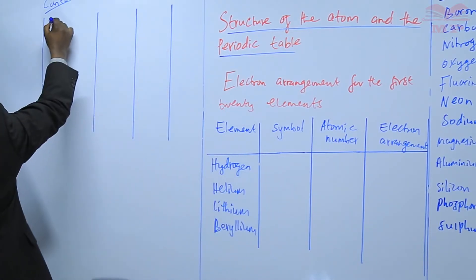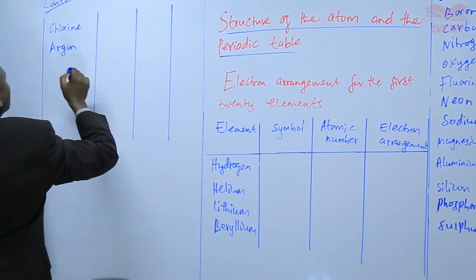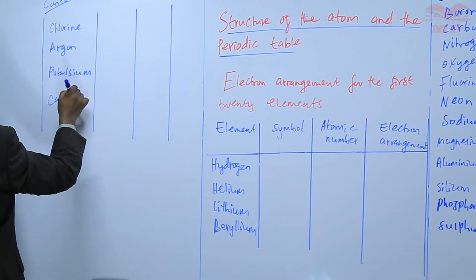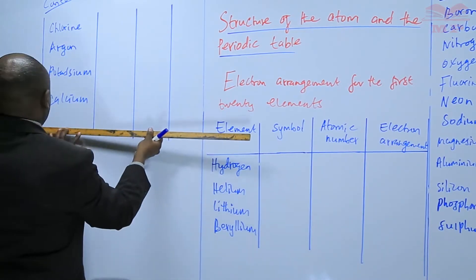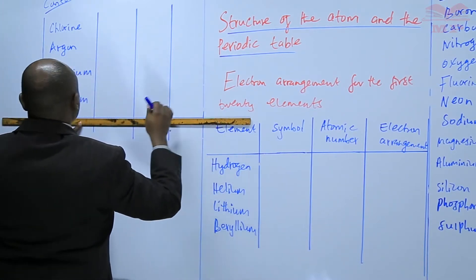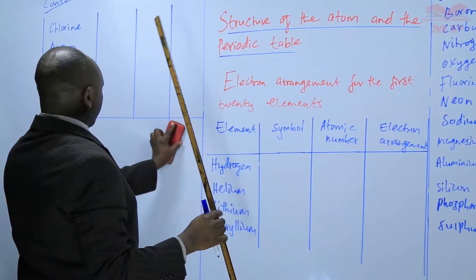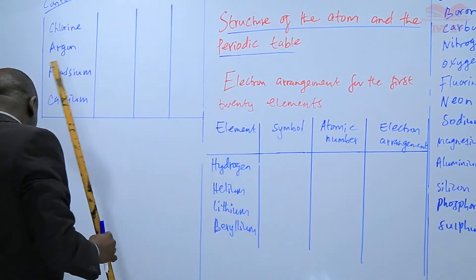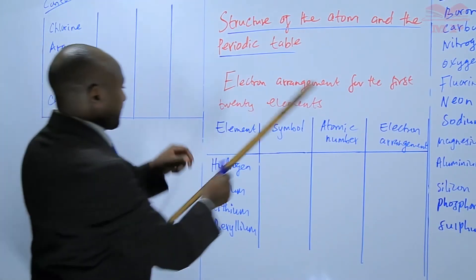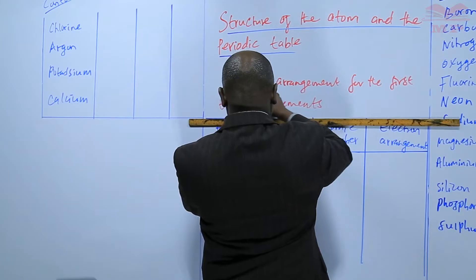From sulfur, we go to chlorine, then argon, potassium, and finally calcium. So, these are the first 20 elements.